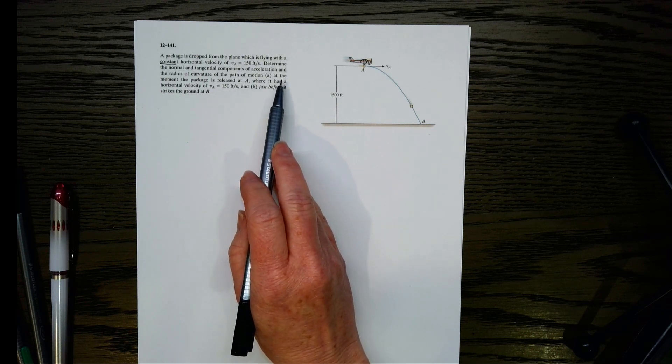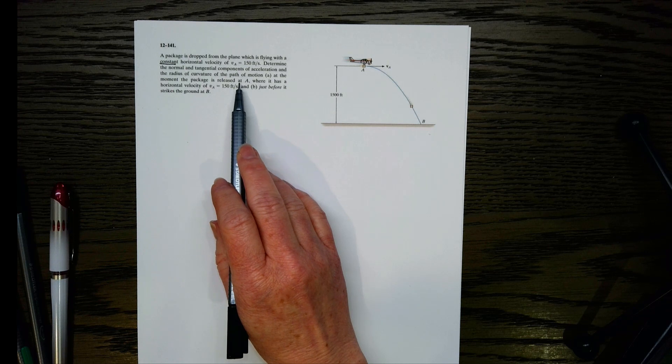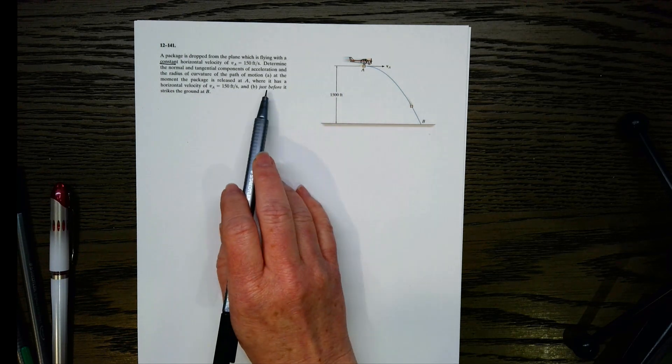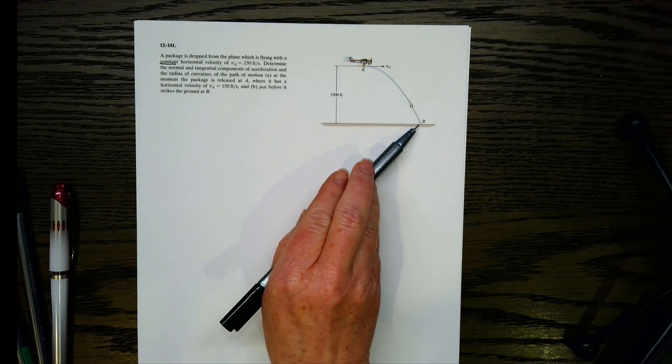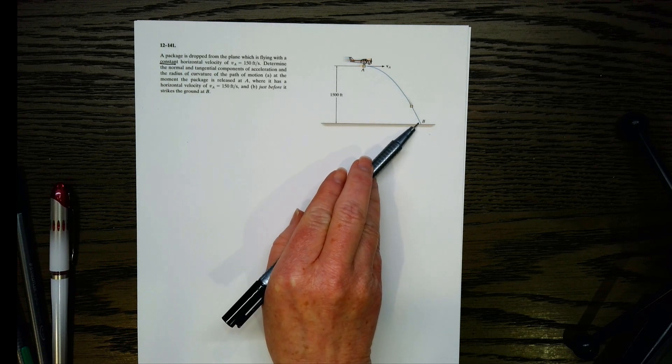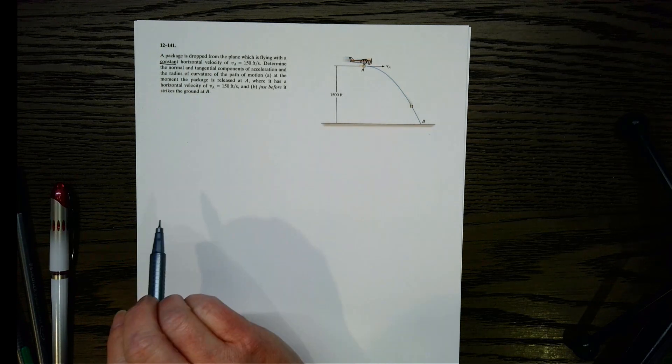First one, we want to do that at the moment the package is released at A, so right here, and then the second one, we want to do it right before it strikes the ground at B over here. So let's see what to do here.